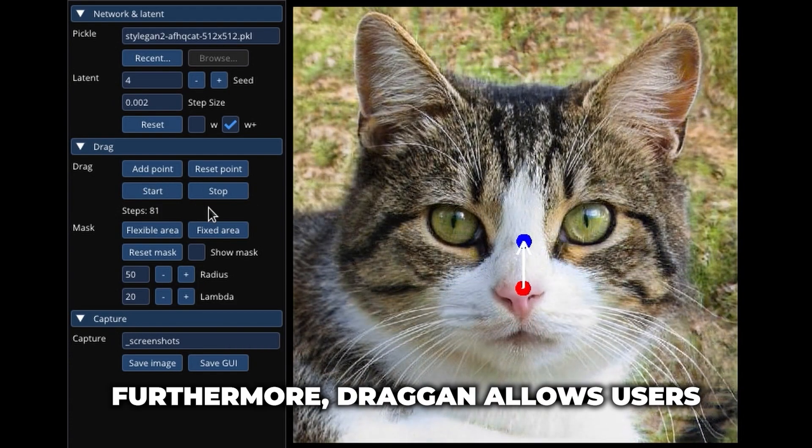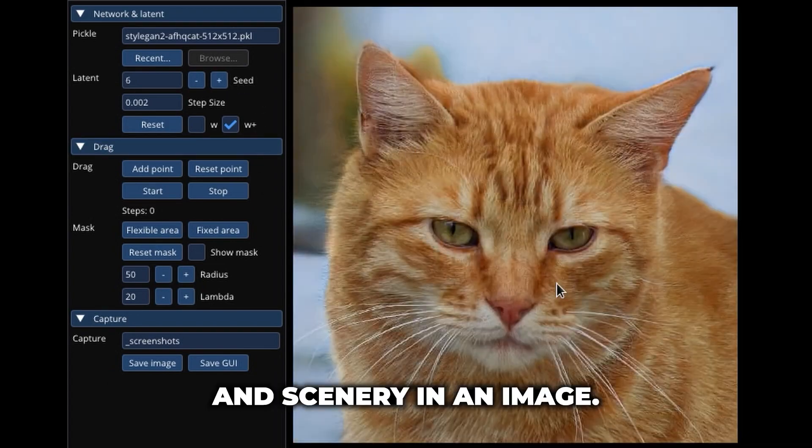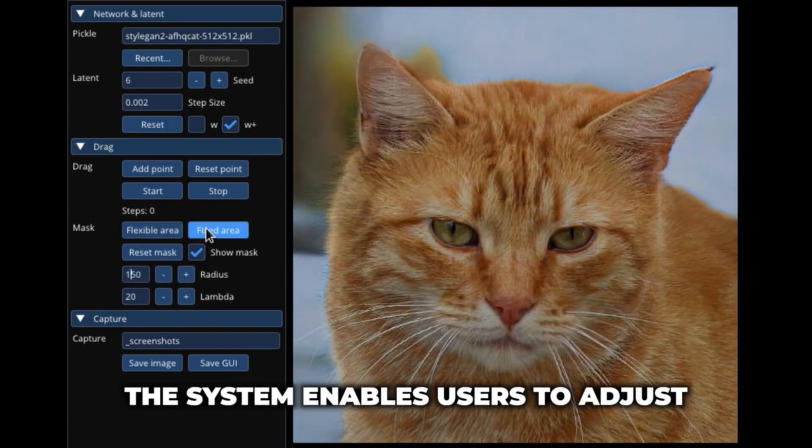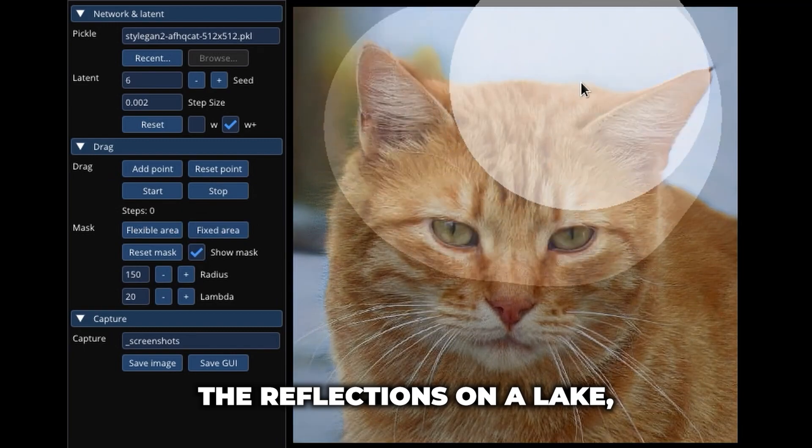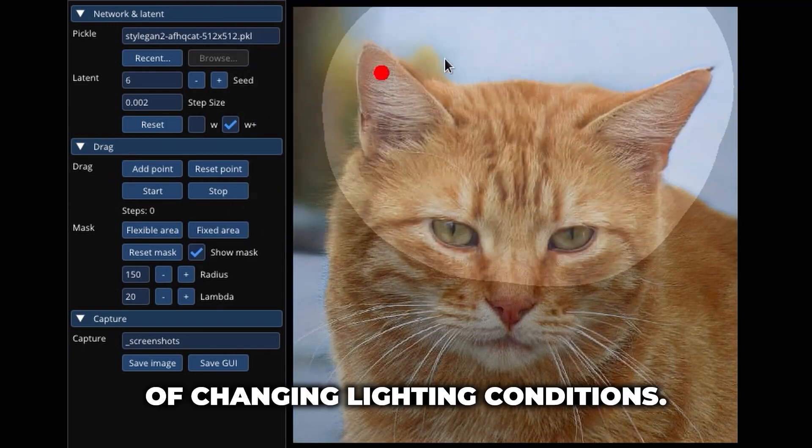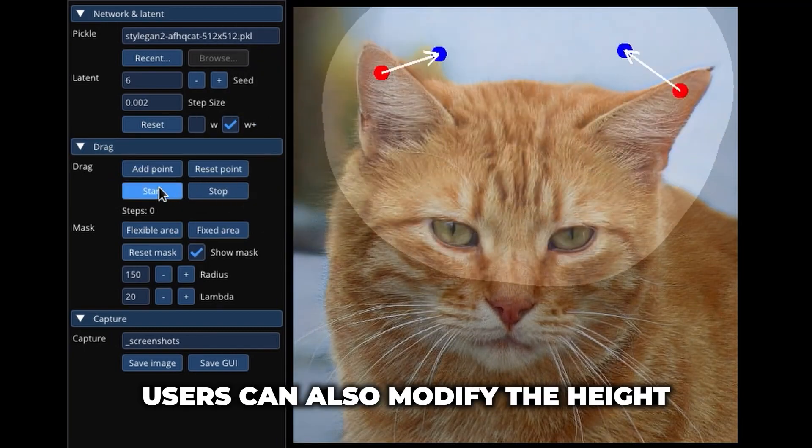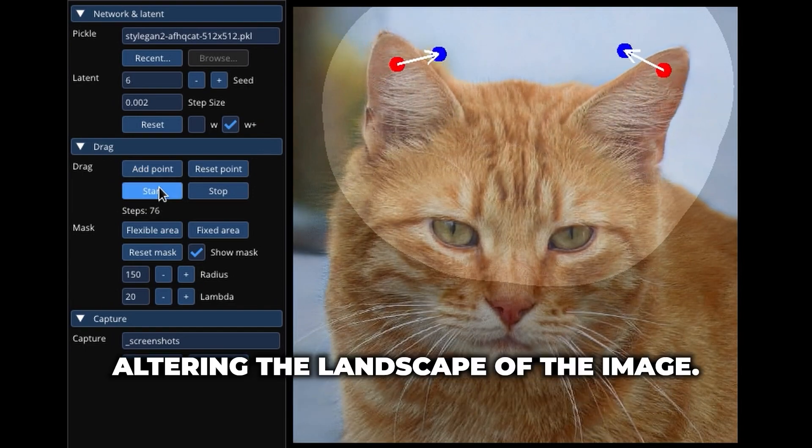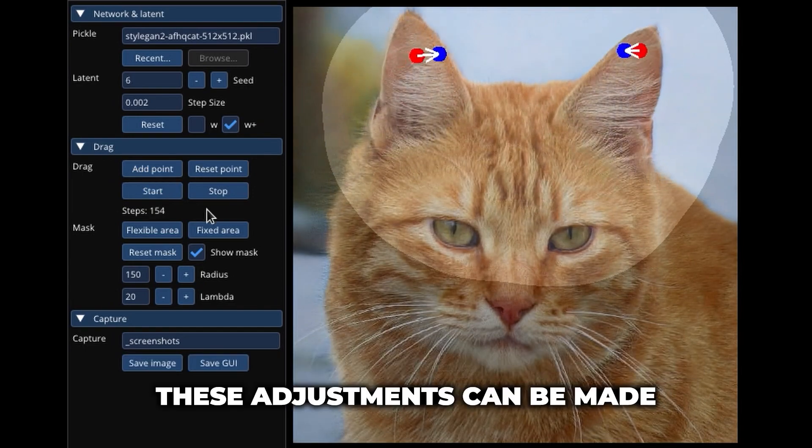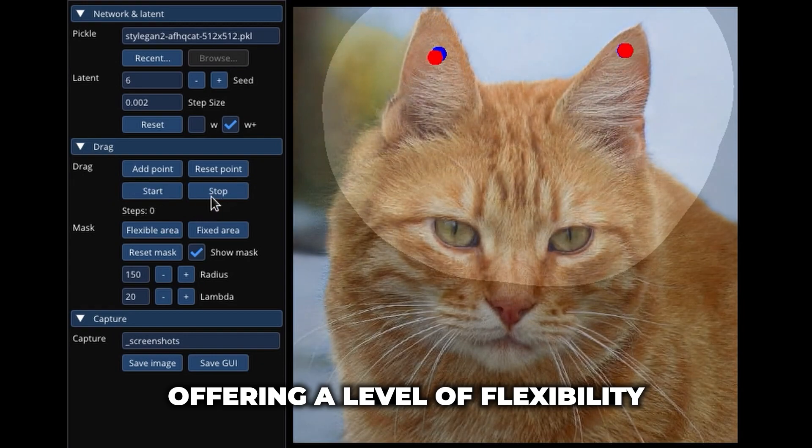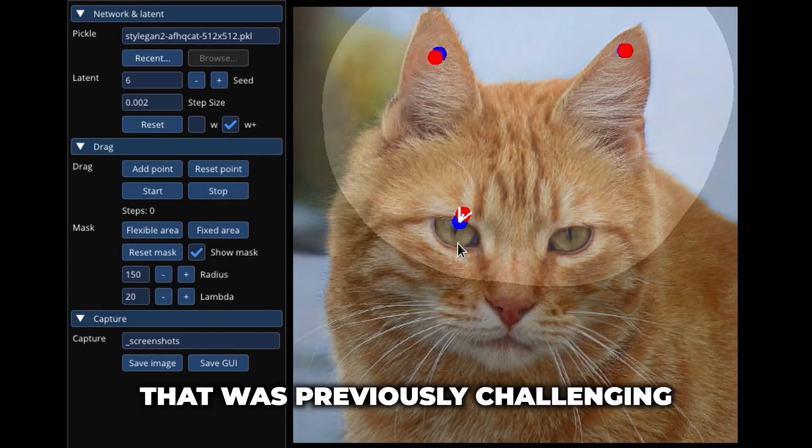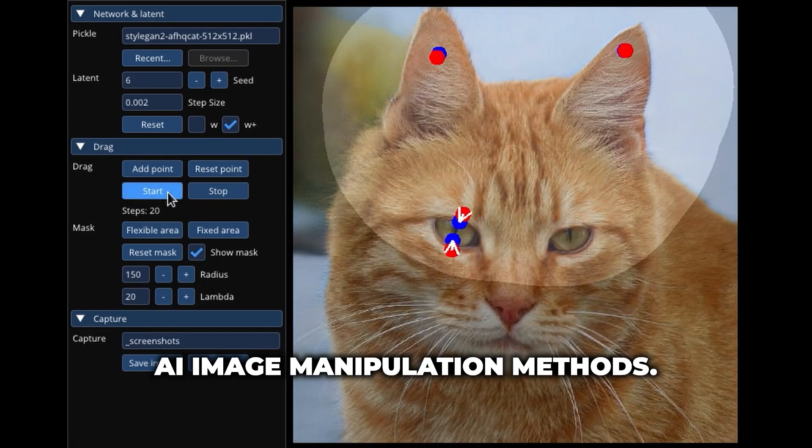Furthermore, Dragan allows users to make changes to the environment and scenery in an image. In one demonstration, the system enables users to adjust reflections on a lake, giving the appearance of changing lighting conditions. Users can also modify the height of a mountain range, effectively altering the landscape of the image. These adjustments can be made with just a few clicks, offering a level of flexibility and ease of use that was previously challenging to achieve with existing AI manipulation methods.